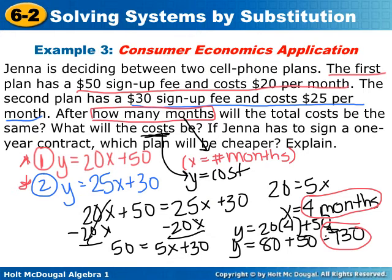The last question asks, if Jenna has to sign a 1 year contract, which plan will be cheaper? So 1 year, remember that x stands for the number of months. So if I'm looking for 1 year, I'm going to put the number 12 in for x. I'm going to erase to make some room and then we'll solve that last part.